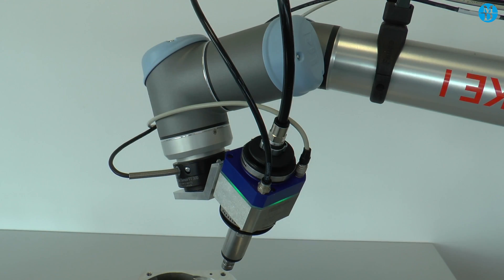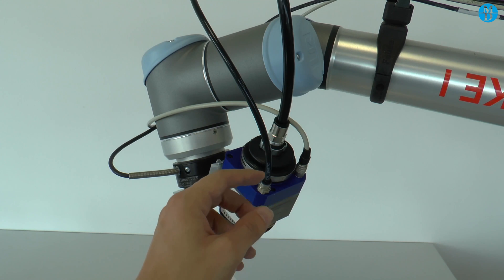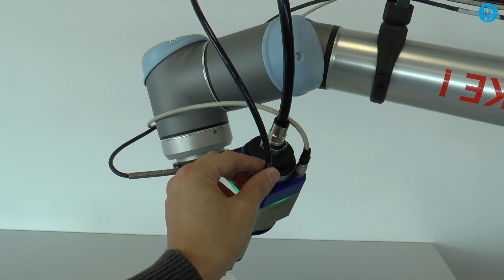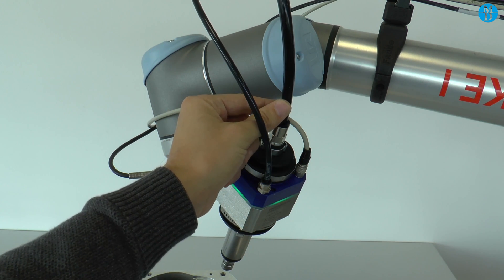Here we see the installed spindle and necessary connections. We can see the air supply for the deflection unit, the air supply for the spindle, and the data cable.